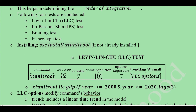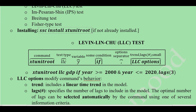We should have the xtunitroot command installed in Stata. The XT prefix stands for panel data with country and time dimensions, followed by the unit root command. If it is not already installed, we should install it using the appropriate install command.